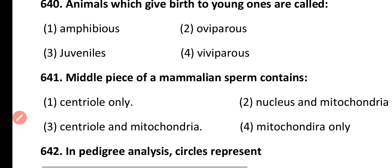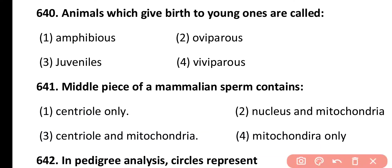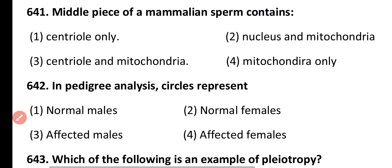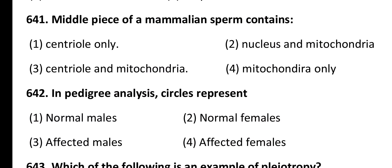Question 640. Animals which give birth to young ones are called: amphibious, oviparous, juveniles, viviparous. Correct answer is option 4. Viviparous animals give birth to the young ones.